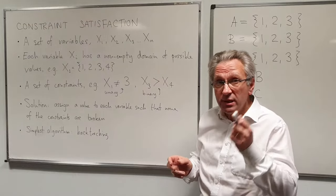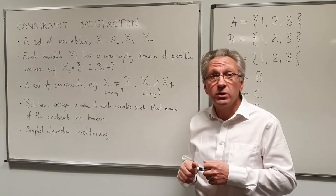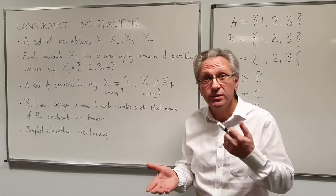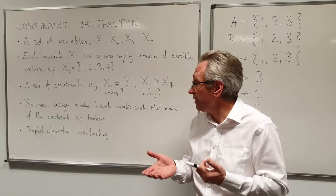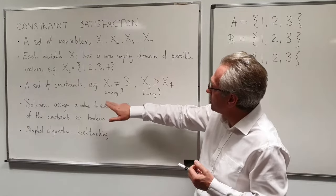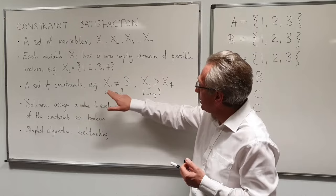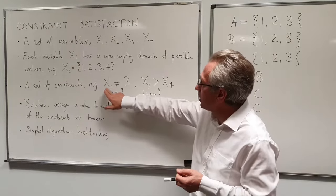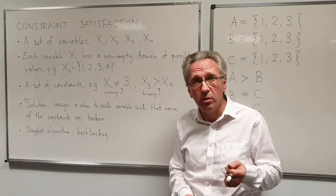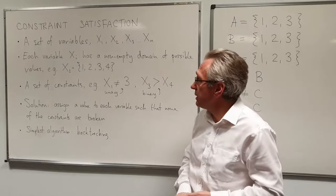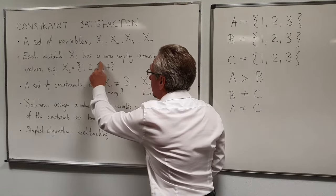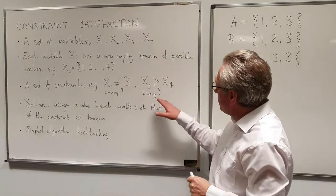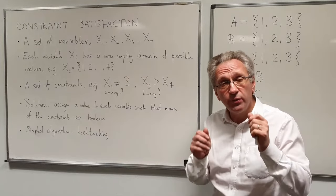We also have a set of constraints, and the constraints are the things that don't allow you to assign some of the values to the variables. For example, a simple constraint could be x1 cannot have the value 3. That's called a unary constraint because it only involves a single variable. We can deal with those very easily by simply removing that value from the domain of the variable.